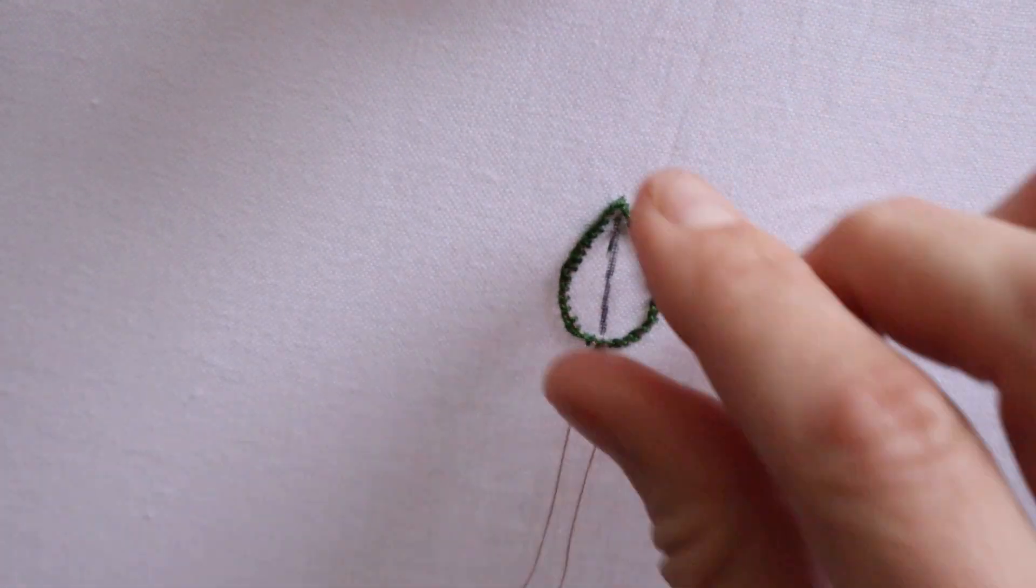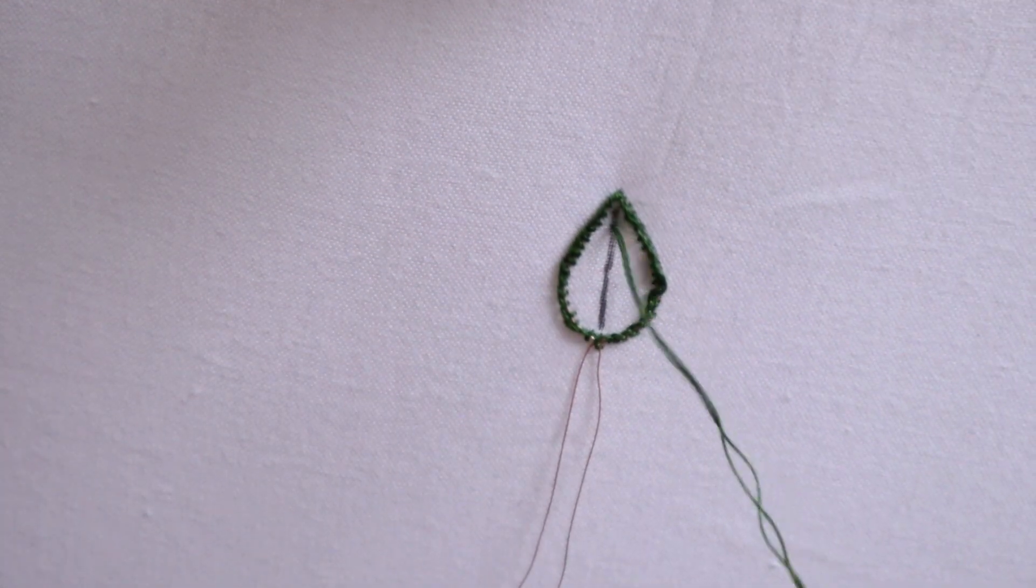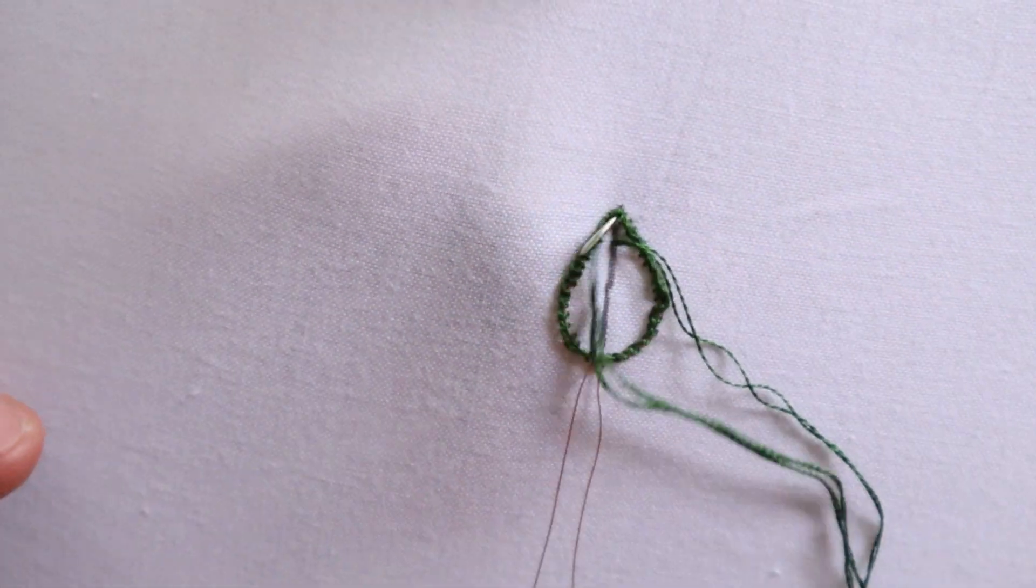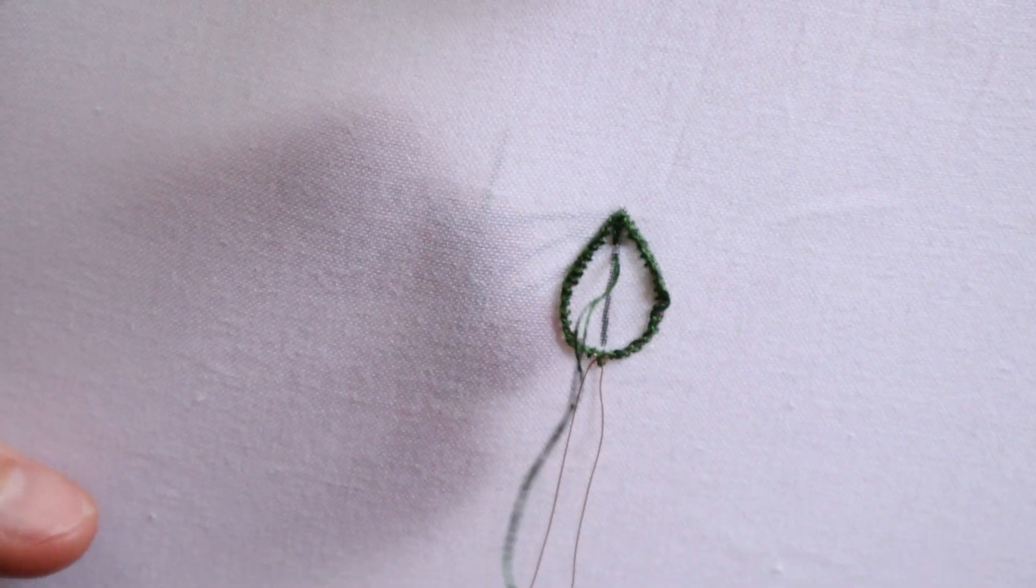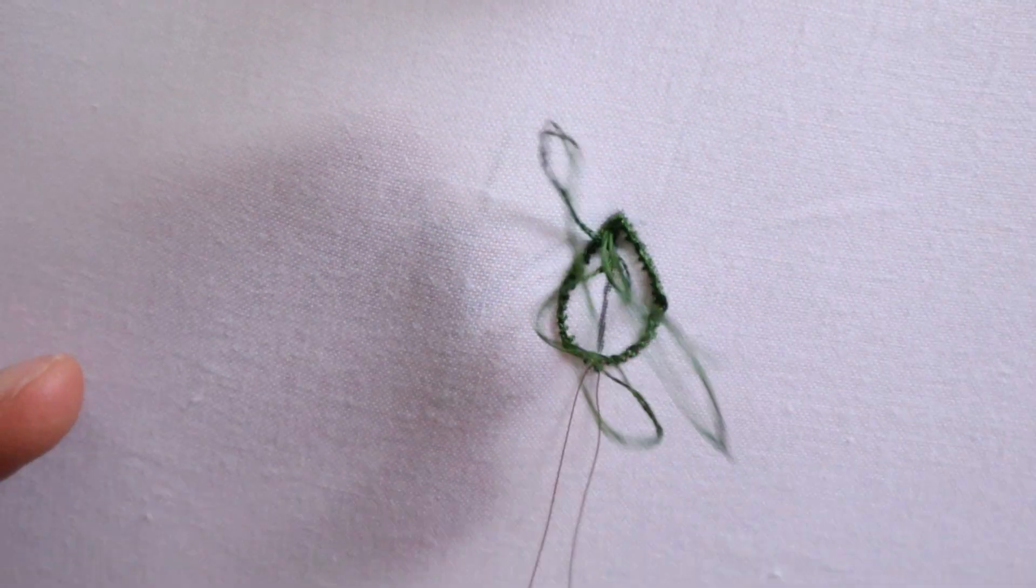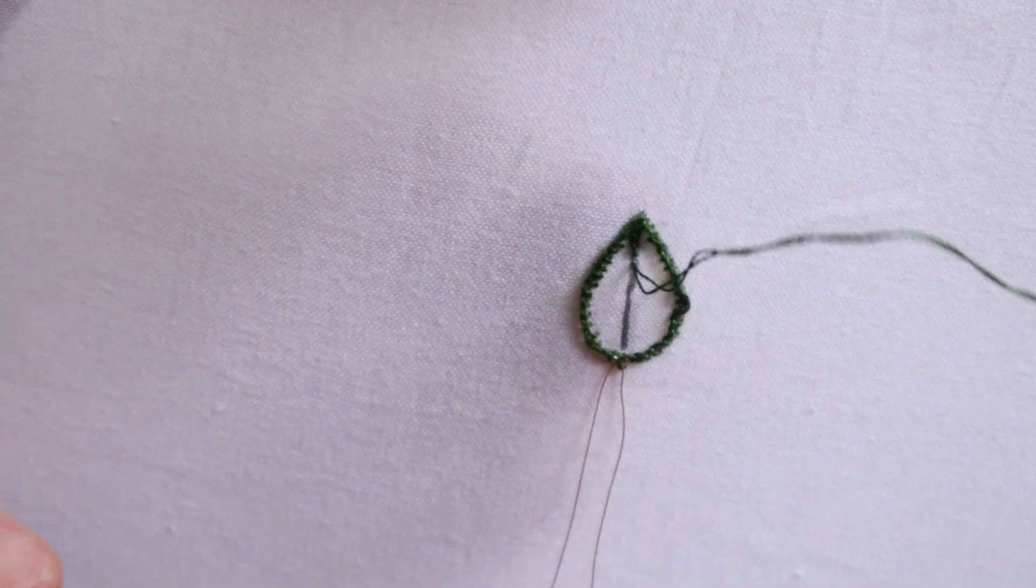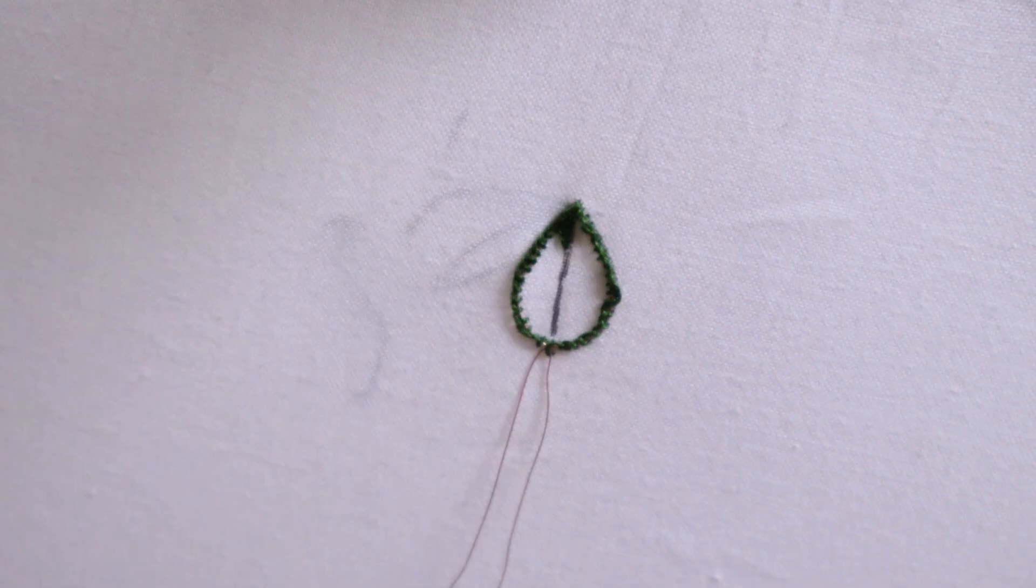I find it easier with these stitches to start towards the center and then go back down close to where those other stitches are, because they can be a little tricky to stitch around sometimes. I'm just gonna go down each side of the leaf and make kind of diagonal satin stitches to fill this in.